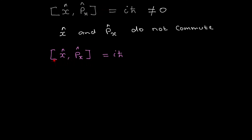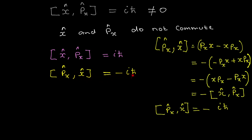So we know that [x, p] equals i·h-bar. We can also show that the momentum-position commutator [p, x] equals minus i·h-bar. To prove this, we expand [p, x], take the minus sign out, which flips the signs inside, and rewrite it as minus(x·p minus p·x). This reminds us of the [x, p] commutator, which we know equals i·h-bar. Because there's a minus sign outside, [p, x] equals minus i·h-bar.